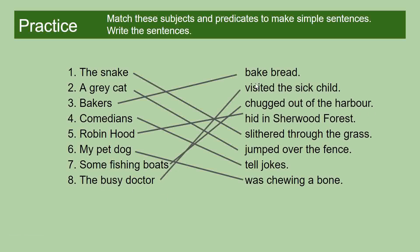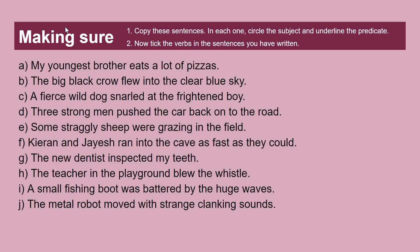The busy doctor visited the sick child. The verb in the predicate is 'visited' and the noun is 'child' — that's the thing, that's the object.